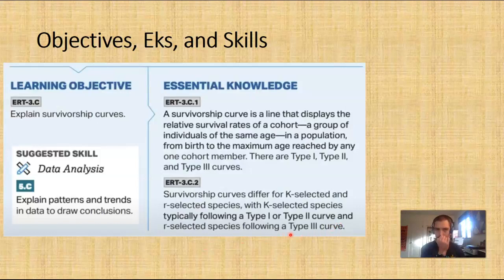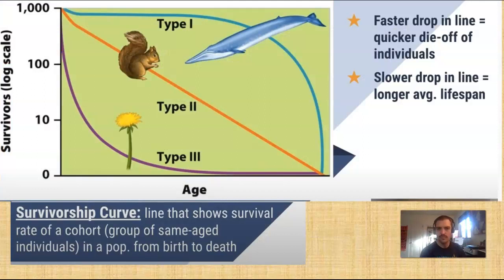At the end, you're going to be practicing a data analysis skill by explaining patterns and trends in data. So like I said, a survivorship curve is a line that shows the survival rate of a cohort, or a group of the same-age individuals in a population from birth to death. The faster the drop in the line, the quicker the die-off of individuals. The slower the drop in the line, the longer the average lifespan.